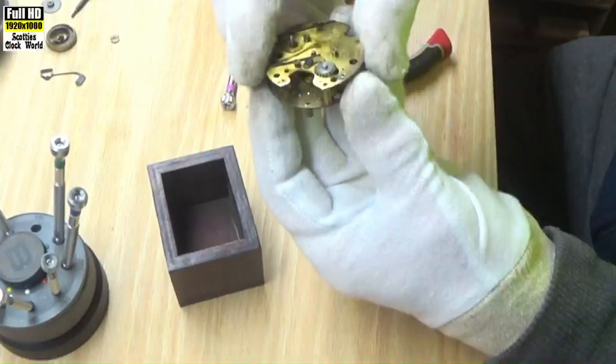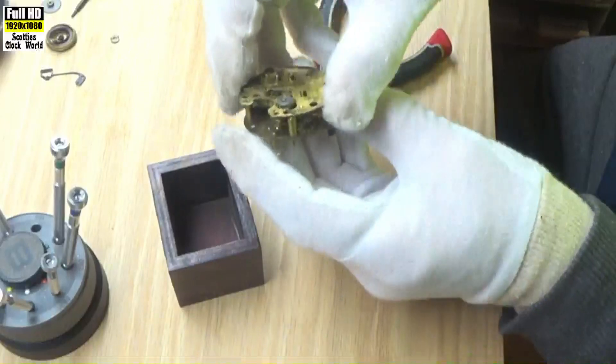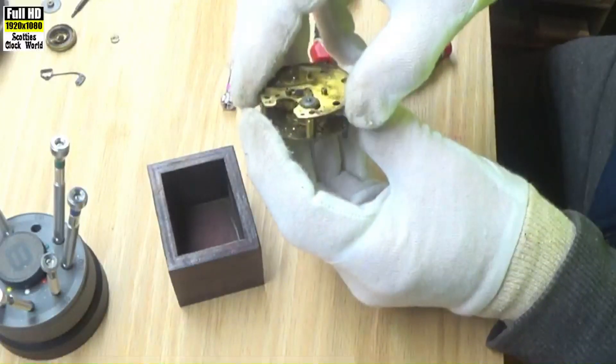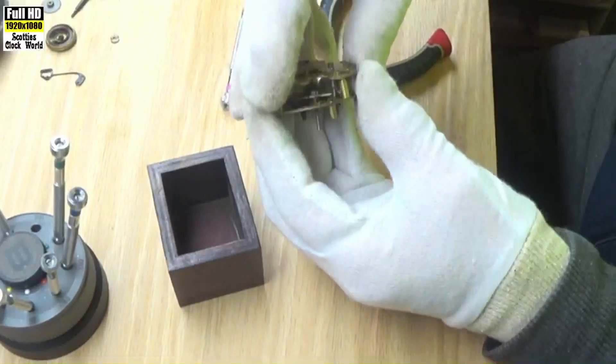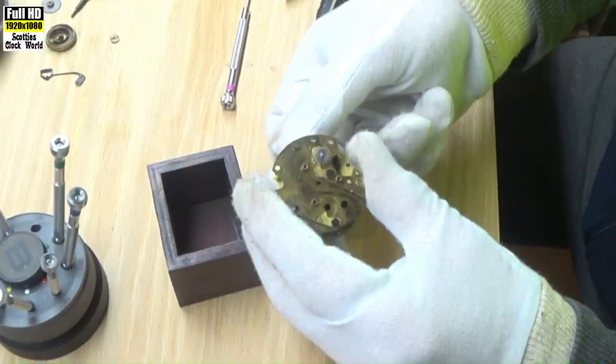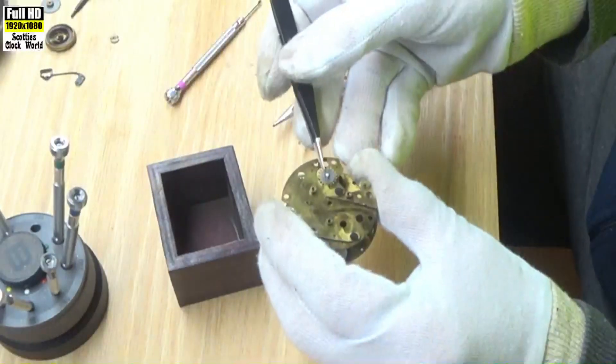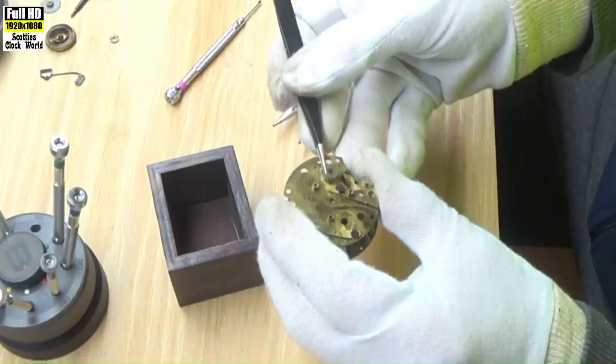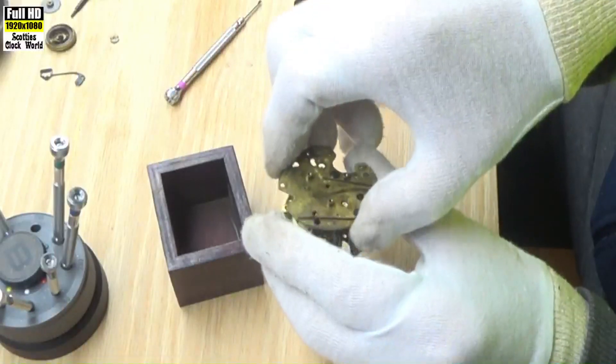Now carefully open them up. Have to get this ratchet wheel off first. Now it'll come apart.